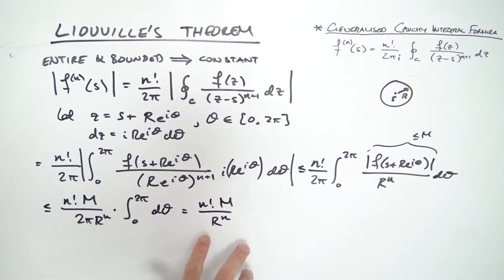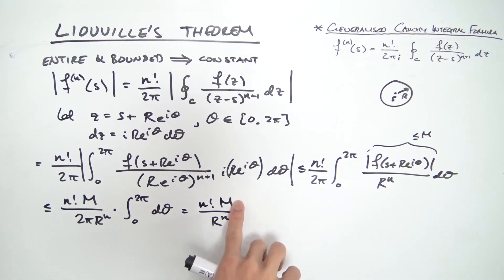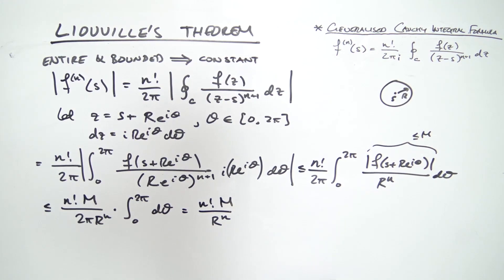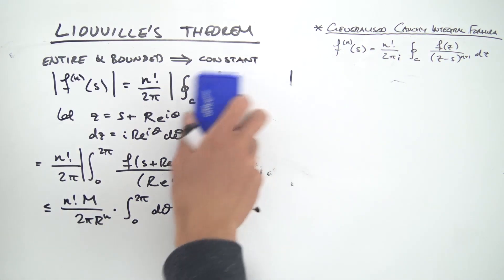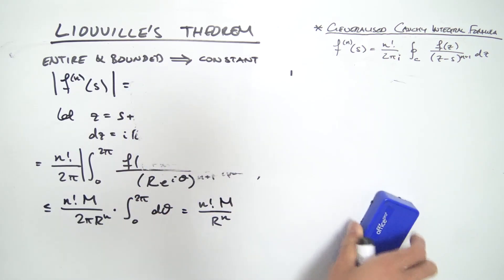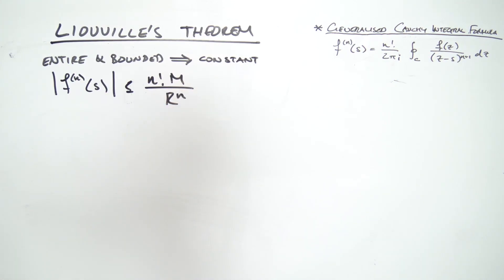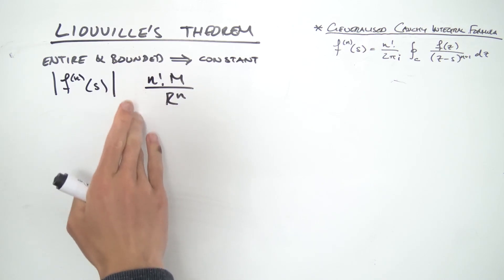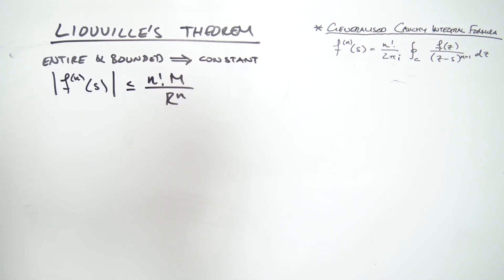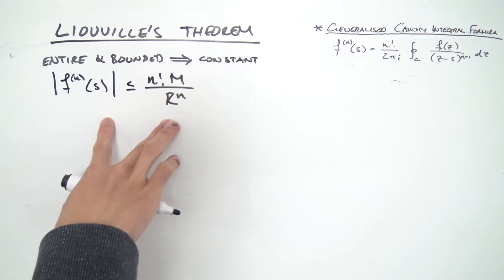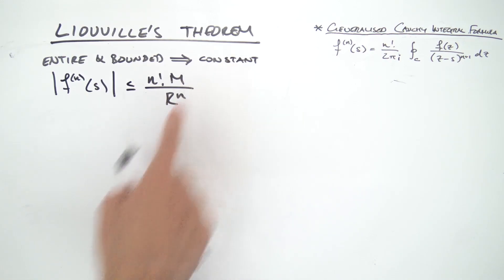So we've shown that |f^(n)(s)| ≤ n! · M / r^n, where M is the upper bound on our function. This result is known as the Cauchy estimates, and it's exactly what we'll use to prove Liouville's theorem.